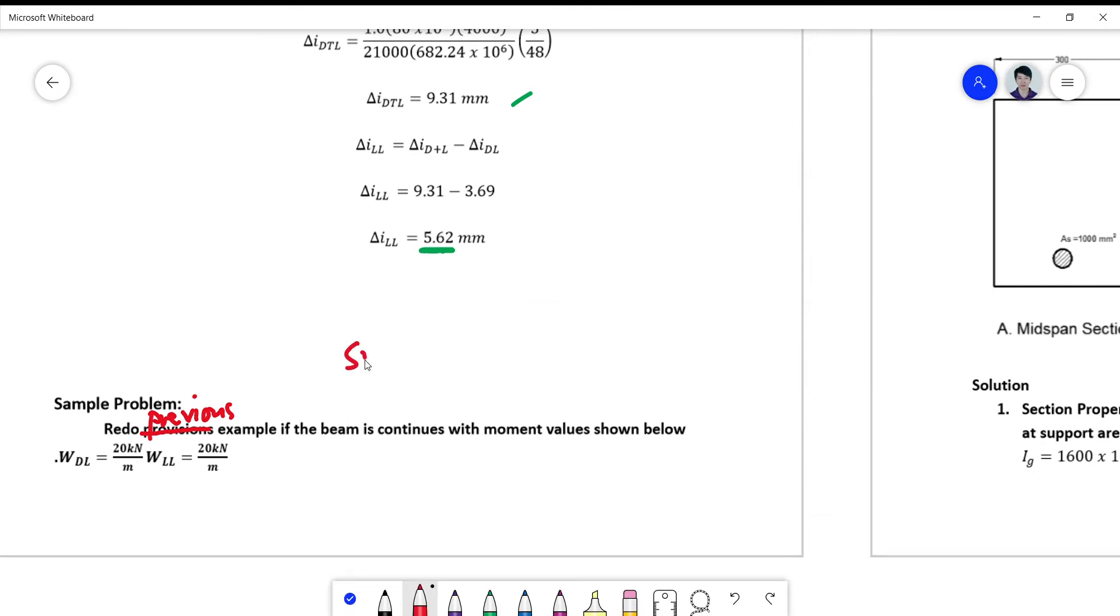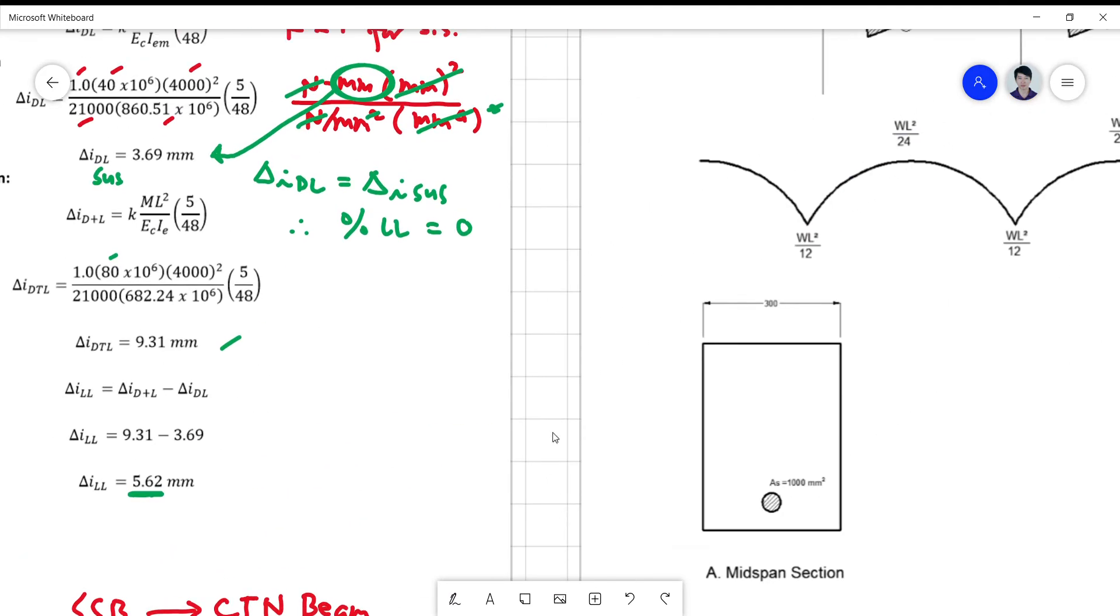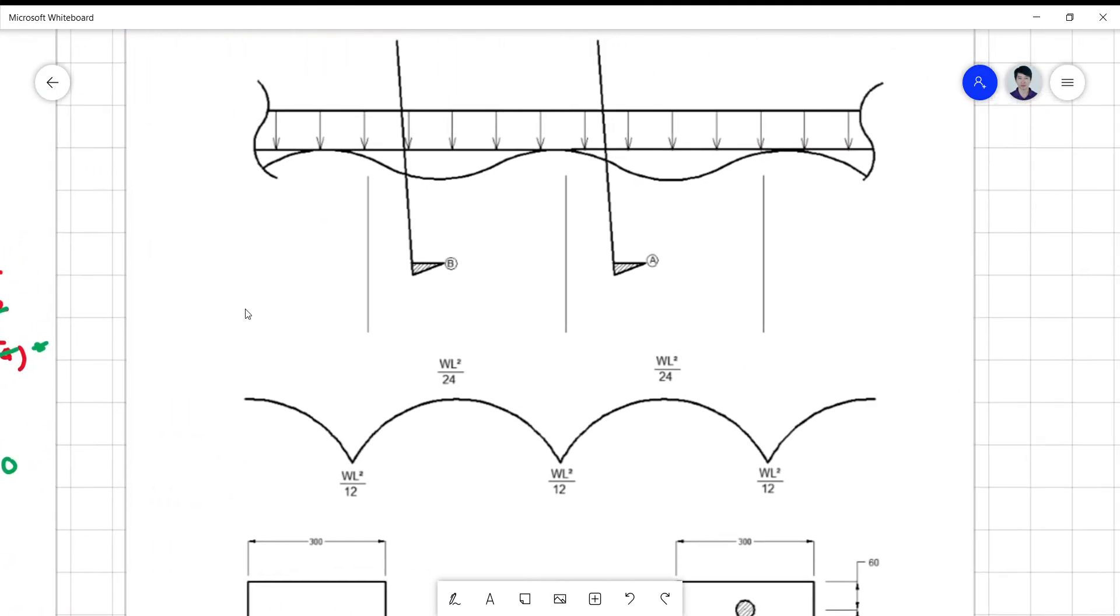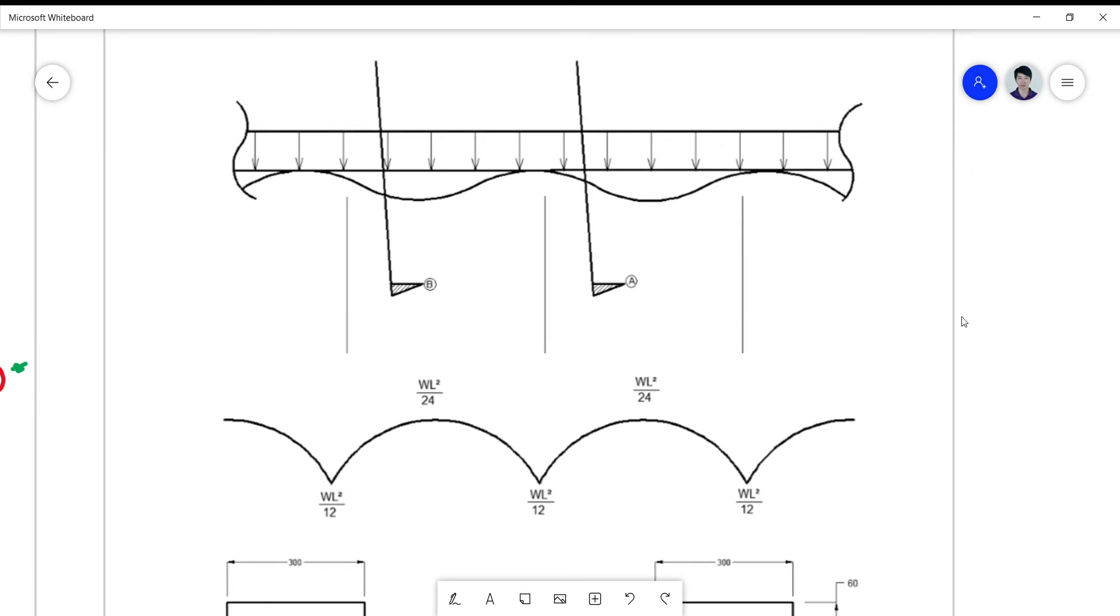From a simply supported beam we make use of a continuous system. And so here are the moment diagrams which were already shown. At the midspan it's WL squared over 24.